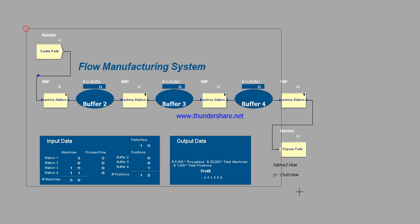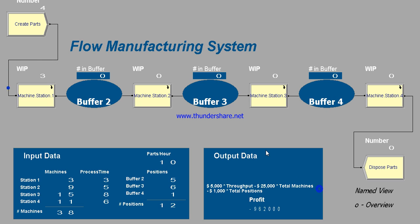Here we have a limit of five for buffer three, a limitation of six, and buffer four with a limitation of one. The maximum number of units is one. We also have output data showing the profit of the system, the number of units within the buffer, and machine stations: station one, station two, station three, and four.